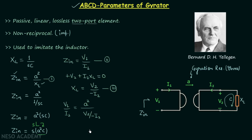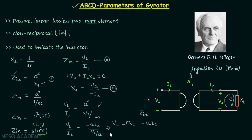Rearranging the right-hand side, we get V1/I1 = (−A·I2)/(V2/A). Therefore V1 = 0·V2 + (−A)·I2, and I1 = (1/A)·V2 − 0·I2. Comparing with the standard ABCD equations, we identify: parameter A = 0, parameter B = A (gyration resistance), parameter C = 1/A, and parameter D = 0.